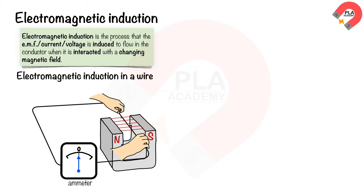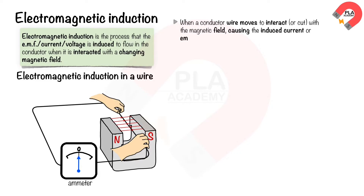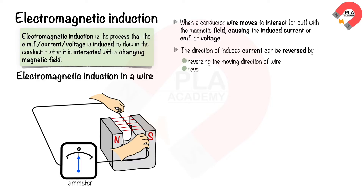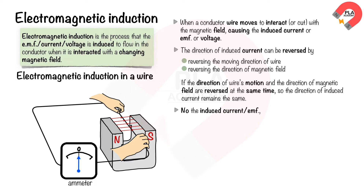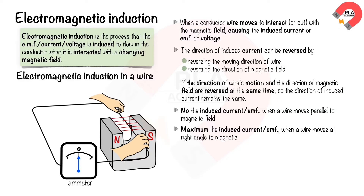We can conclude that when a conductor wire moves to interact with the magnetic field, it causes an induced current in the wire, which also causes an induced EMF or voltage. The direction of induced current can be reversed by reversing the moving direction of the wire or reversing the direction of the magnetic field. If both are reversed simultaneously, the direction of induced current remains the same. There is no induced current when the wire moves parallel to the magnetic field, and maximum induced current when the wire moves at a right angle to the magnetic field.